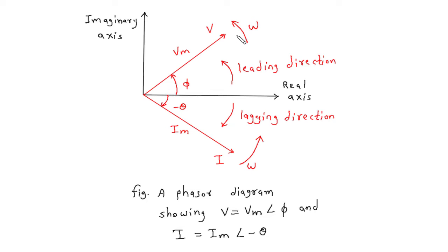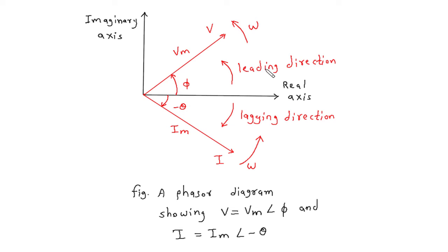This is a phasor of V equal to Vm at an angle phi, and this is a phasor of I equal to Im at an angle of minus theta. Now here we can see the phasor rotates in a counter-clockwise direction, or anticlockwise direction — meaning opposite to the direction of a clock.